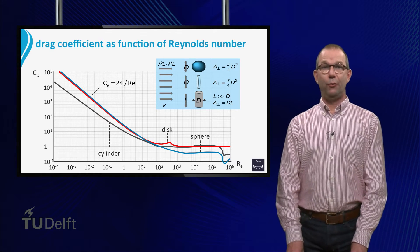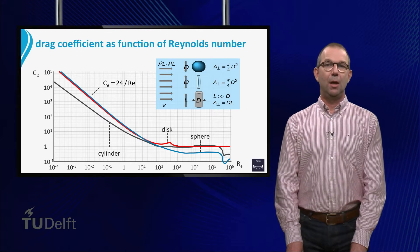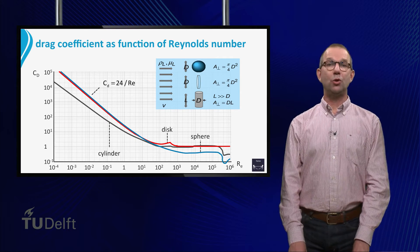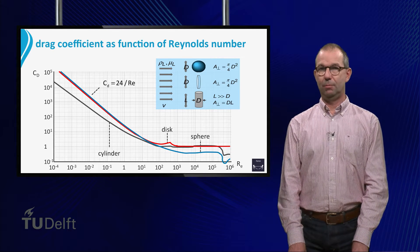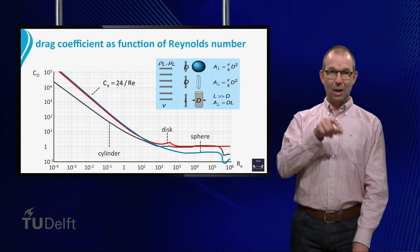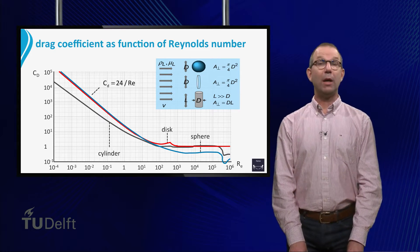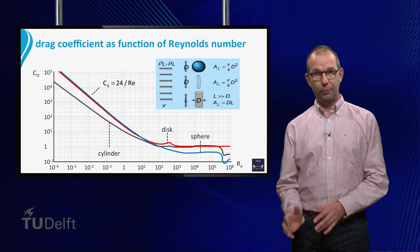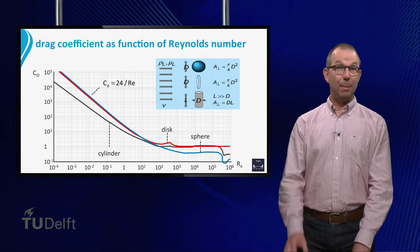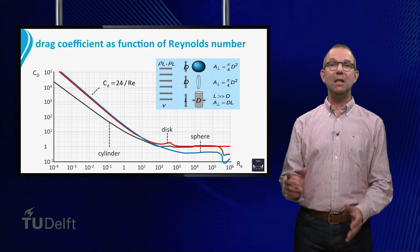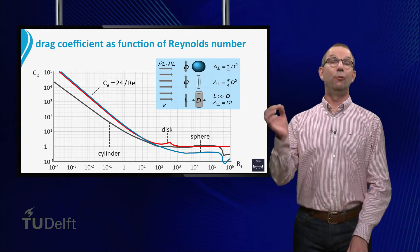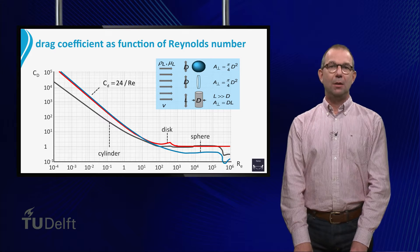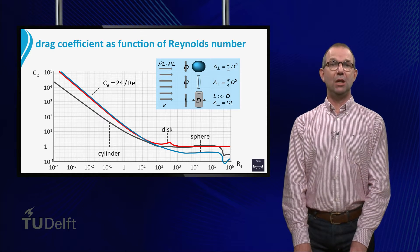In general there is no analytic expression for CD; instead we have to use experiments and nowadays computer simulations. In the graph, the drag coefficient is shown for various objects. We see the blue line for spheres, a red line for disks, and a black line for cylinders. Note that both axes have a logarithmic scale. We recognize two regimes: for small Reynolds numbers the lines are straight, meaning CD is inversely proportional to Reynolds; for large Reynolds numbers the lines become flat, meaning CD is a constant.